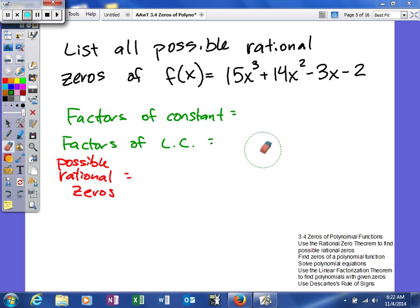In this example, we're going to look at another problem dealing with all the possible rational zeros. So we have the function f of x equal to 15x cubed plus 14x squared minus 3x minus 2.